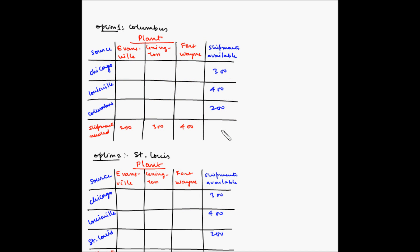On the screen you can see the transportation tables for two options. In the first table, if the third location is Columbus, on the left-hand side are the sources — the two existing sources Chicago and Louisville, plus Columbus as the third option. On the extreme right are the shipment capacities at each source. On the top are the destinations, which are the plants: Evansville, Lexington, and Fort Wayne. At the bottom are the demands at each of these locations.